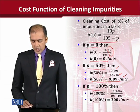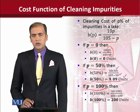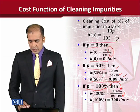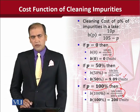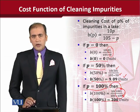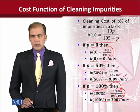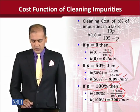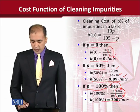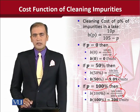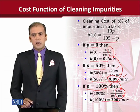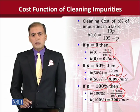Let us extend our analysis by saying that 100% of the cleaning is to be done and substitute that into the cost function. Once we do that, we get the cost, and that is 200 in this case. You see the pattern: initially there was no cost because there was no cleaning, and 50% of cleaning required only 9.09 units.